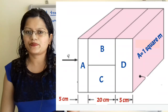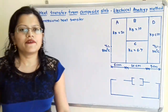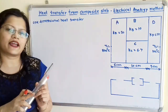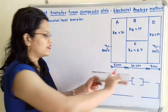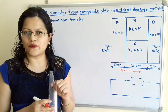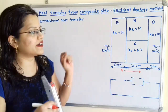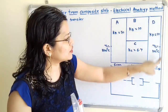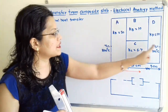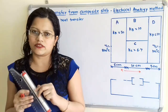Let us understand the given diagram. Here different materials are given: material A, B, C, and D. We will assume the heat transfer is taking place from the left-hand side towards the right-hand side, and we will show the direction of heat flow as Q. The initial temperature T1 is 800 degree Celsius and the final temperature T2 is 100 degree Celsius. The heat transfer is taking place between T1 and T2 through the different materials by the conduction process.